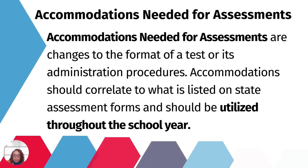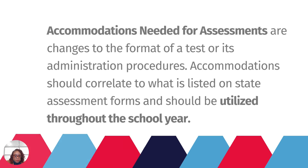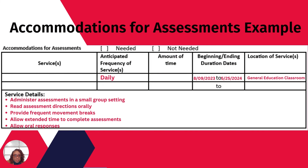Accommodations needed for assessments should be included for all students taking classroom and district-wide assessments. Testing accommodations change how students are tested but do not change what a test measures. The IEP example on the services page includes the anticipated frequency of services, duration dates, location of services, and service detail. Record all accommodations the student needs for assessments regardless of whether they are allowed on state assessments. Accommodations should correlate to what is listed on state and district-wide assessment forms and should be provided on an ongoing basis for classroom assessments throughout the school year.